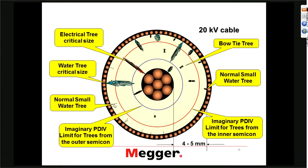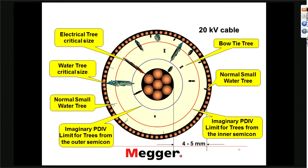A water tree of critical size has already crossed about three-quarters of the insulation. These are the types of water trees that, when you do the VLF test, will get converted to electrical tree and now grow very rapidly to failure. With small water trees, the high voltage test level of the VLF test will not do anything — they just sit there, because the electrical field is much smaller at their tip. That's really the combination of the electrical field created by the water tree itself and the superimposed electrical field from the test voltage that makes the conversion.